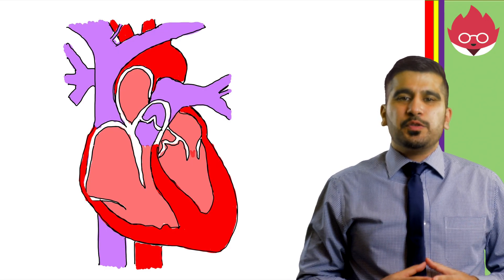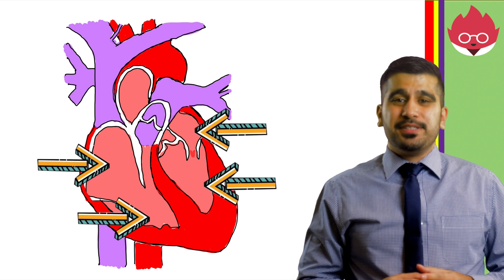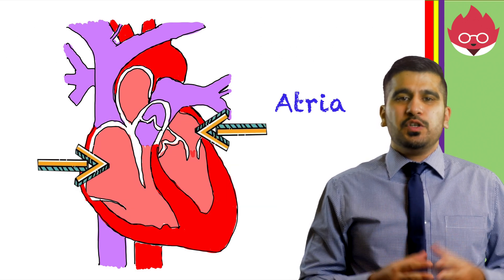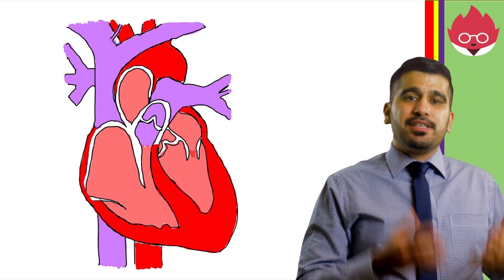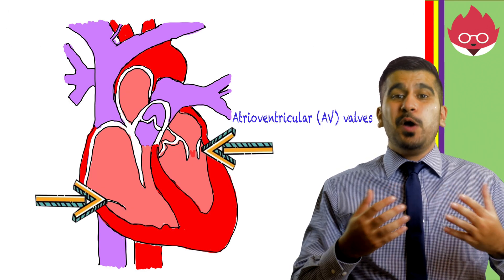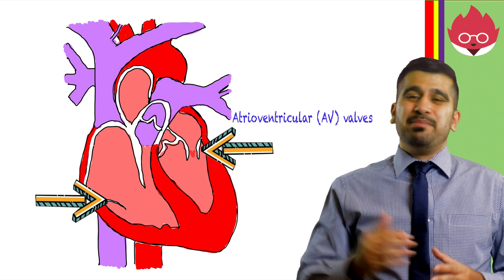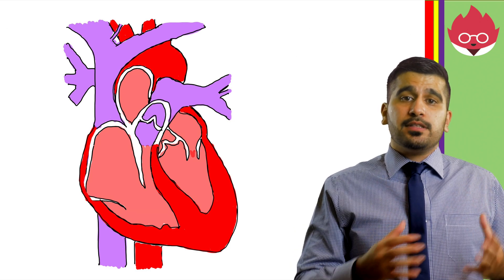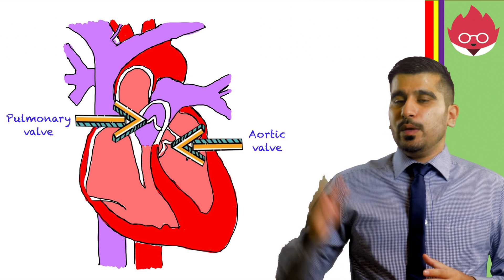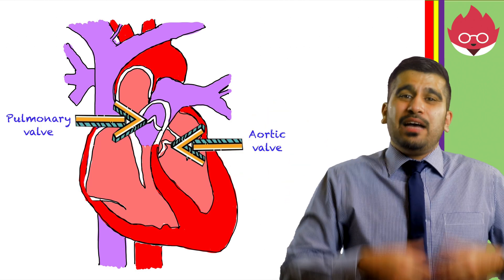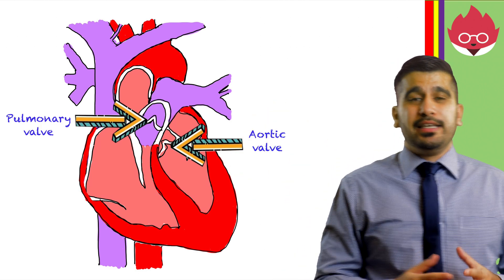When looking at the heart's internal structure, we can see that it's made of four chambers — two atria at the top and two ventricles at the bottom. These chambers are separated by valves which can open and close, allowing blood to move from one chamber to the next. There are also valves located at the points where blood exits the heart. Now let's look at how blood actually moves through the heart itself.